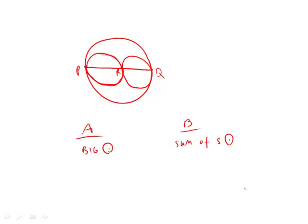There are two ways of getting at this problem. One way is to try out numbers and see what happens. So let's assume that this circle here has a diameter of 4 and the smallest circle has a diameter of 2. What would the sum of their circumferences be?